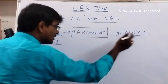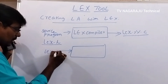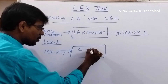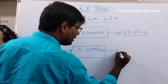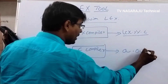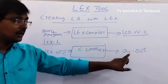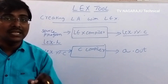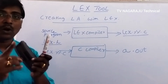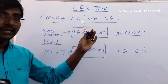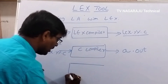Now the second step: you have got a C program. The C program is provided as input to the C compiler. Then the C compiler generates an object code, a.out. Remember, this a.out acts as the lexical analyzer. What does the lexical analyzer do? It simply reads some input stream and then produces some tokens.